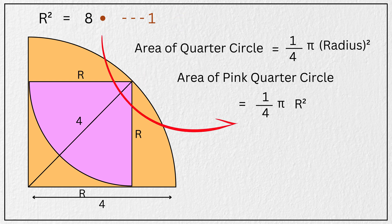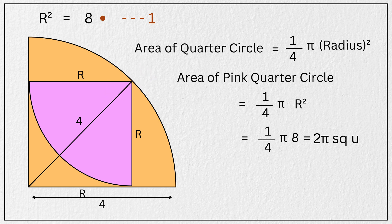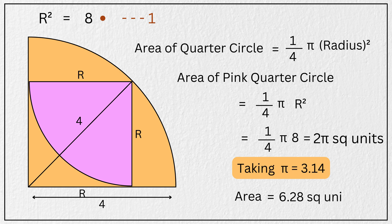So substituting R squared equal to 8, we have area of this pink quarter circle is equal to one fourth times π times 8, which simplifies to 2π square units. And if we take π as 3.14, the approximate area equals 6.28 square units.